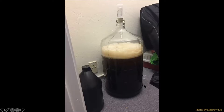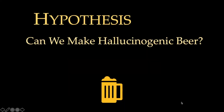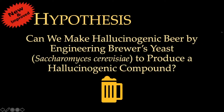So this is a carboy, which is used to brew beer. Inside we have a nice sugary solution that is fermenting — there's yeast in there creating carbon dioxide. On top we have an airlock, which allows air to escape but not enter, keeping it sterile. This is beer brewing in a closet in Berkeley with my roommate Matthew Lou.